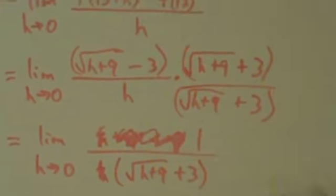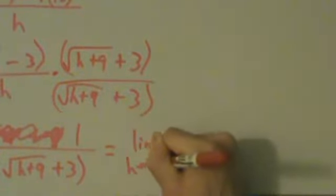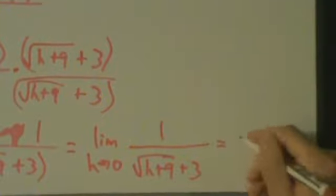So what we really have is a limit as h goes to 0 of 1 over root h plus 9 plus 3. And now we can drop the parentheses because the other h is gone. So now we can do direct substitution, right? So this is just going to be what?